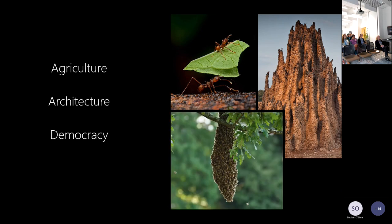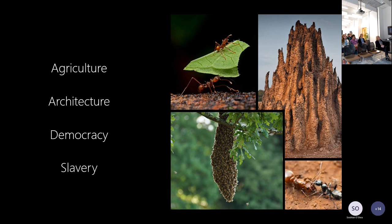We then have democracy, which is actually surprisingly common in social insects in terms of decision-making and voting for options, such as a swarm of honeybees choosing a new nest site. And then finally, not such a great one, we have slavery. There are actually several genera of ants that are obligate slave raiders. That's a Polyergus queen being tended to by an ant of a different genus, Formica, which has been captured.